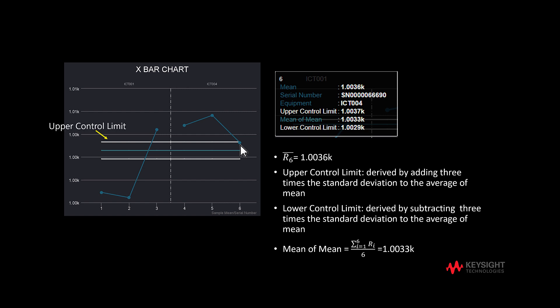The upper control limit is derived by adding 3 times the standard deviation to the average of the mean. The lower control limit is derived by subtracting 3 times the standard deviation from the average of the mean. The center line is the average of the mean points.